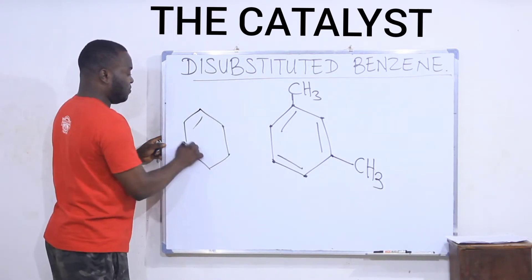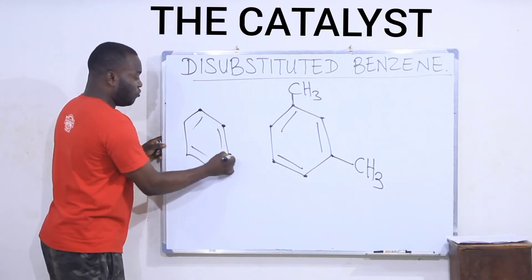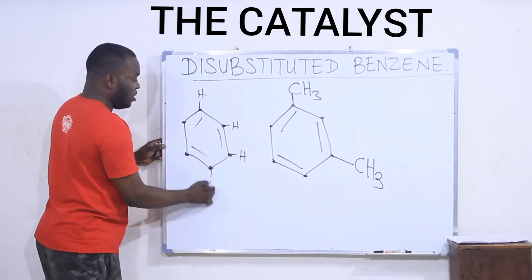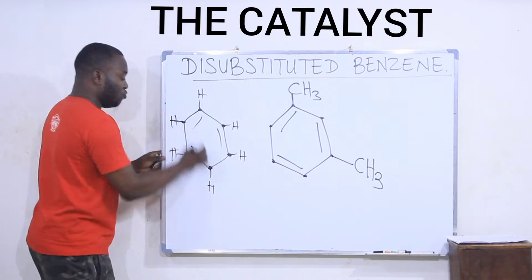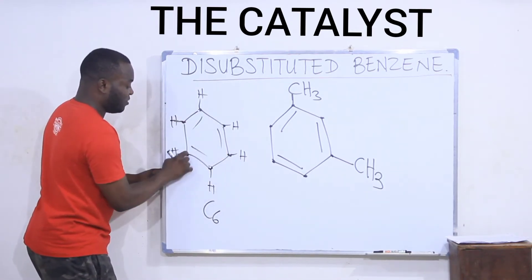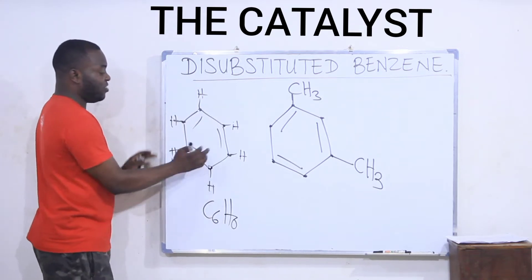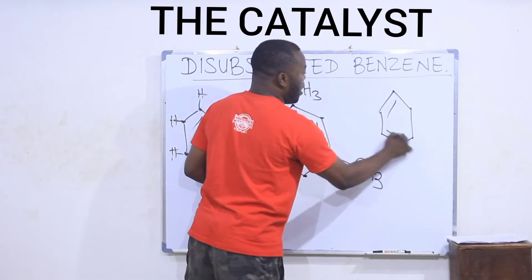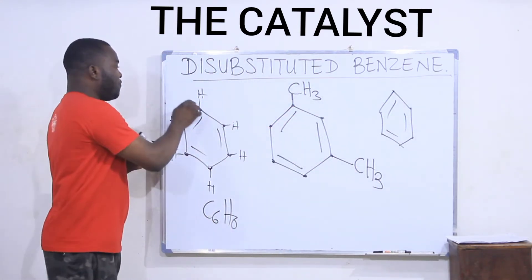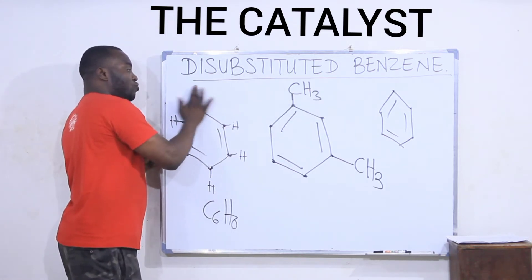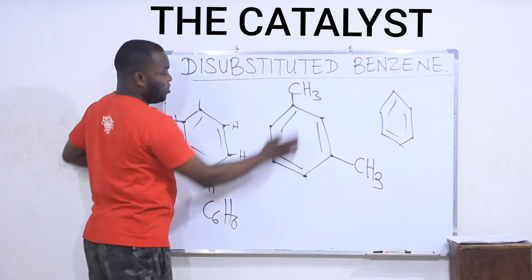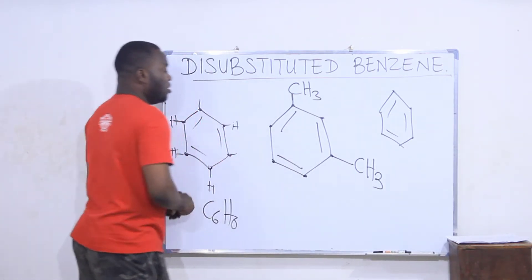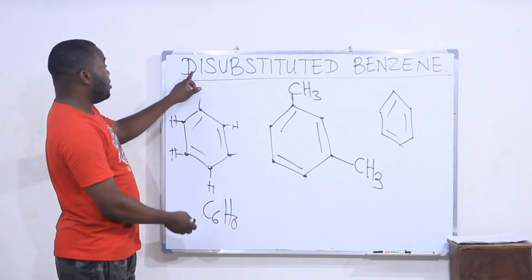Do not forget that the benzene ring is like this — these are carbon atoms. These junctions represent positions of carbon, and each of the carbons carry a hydrogen. So benzene is C6H6. This is benzene, but when we draw it most times we don't show the carbons and hydrogens, but bear in mind that they are there. So if I put something here it means I remove a hydrogen and replace it with a methyl group CH3. Two hydrogens have been substituted — that's why it is called disubstituted. Di means two.